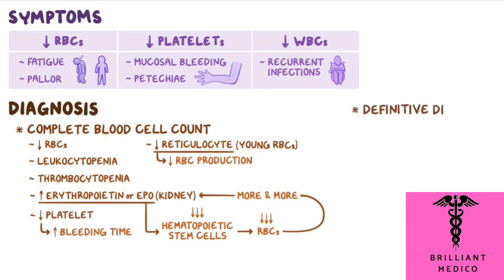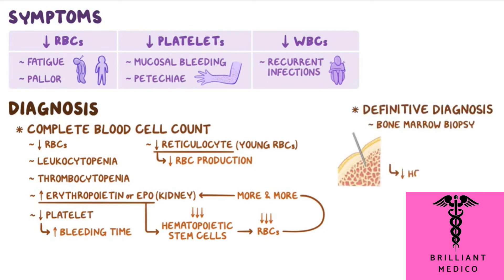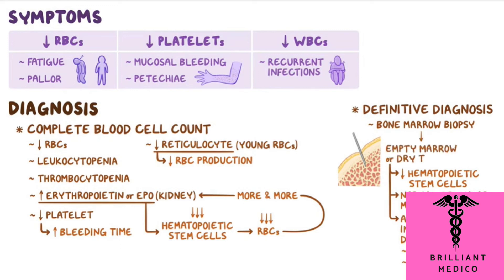Definitive diagnosis requires a bone marrow biopsy, which demonstrates profoundly low counts of hematopoietic stem cells with normal cellular morphology in the absence of any infiltrative disorder like malignancy or fibrosis. This is also referred to as an empty marrow or dry tap.